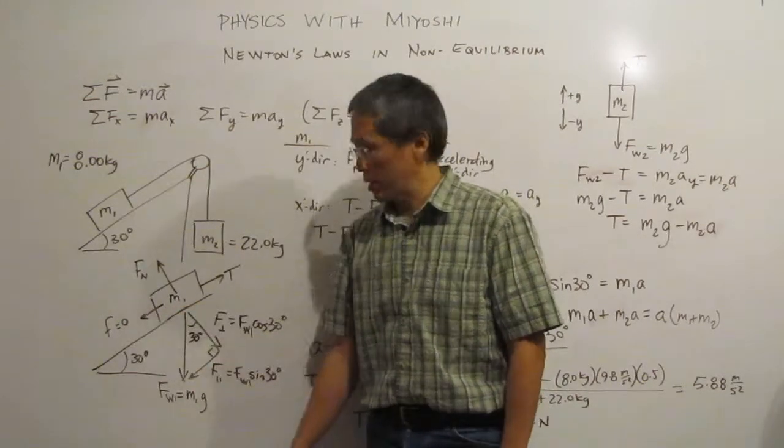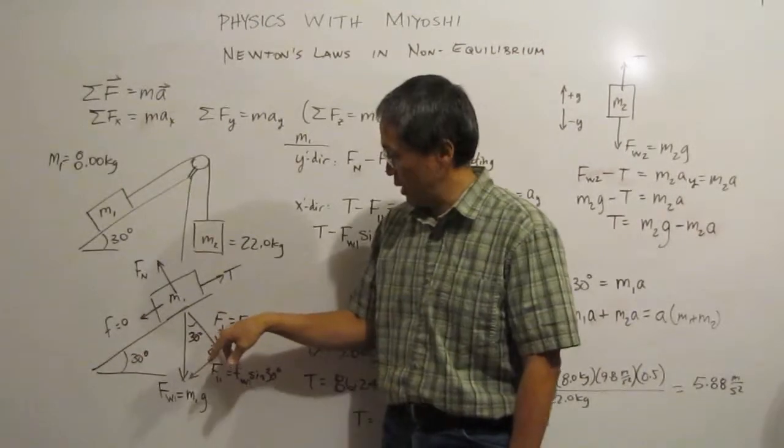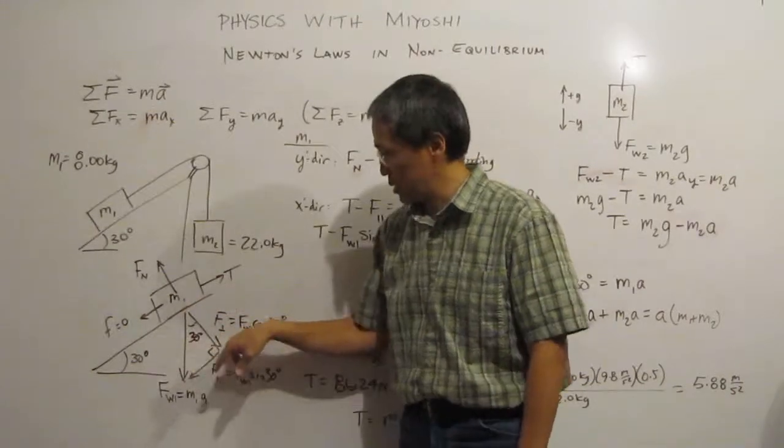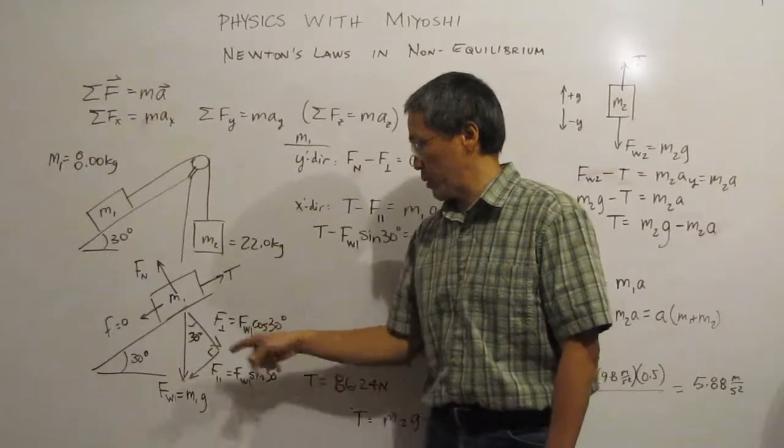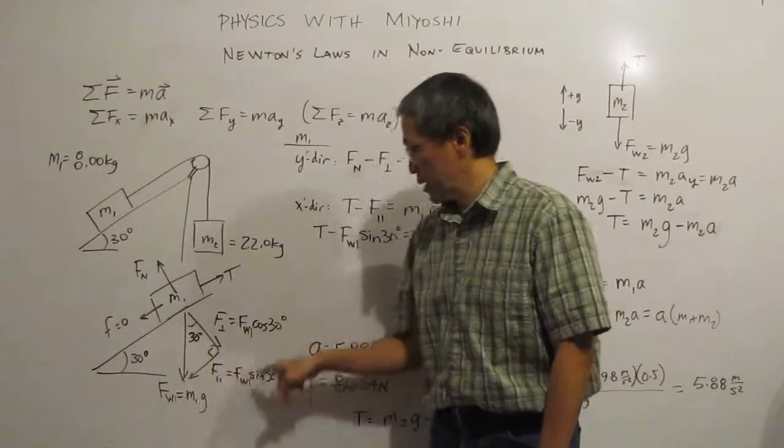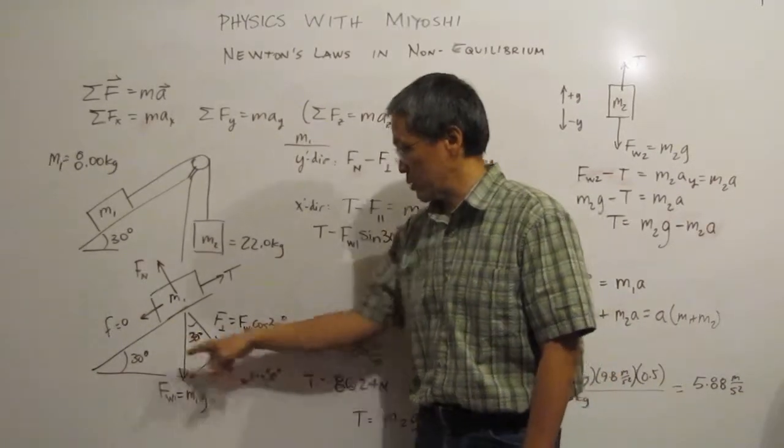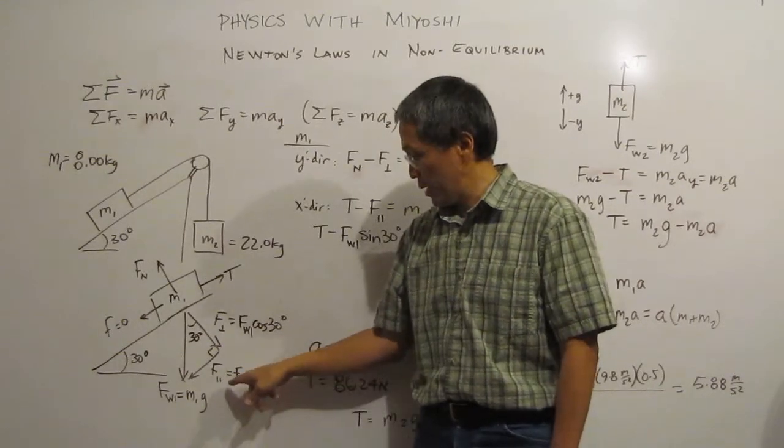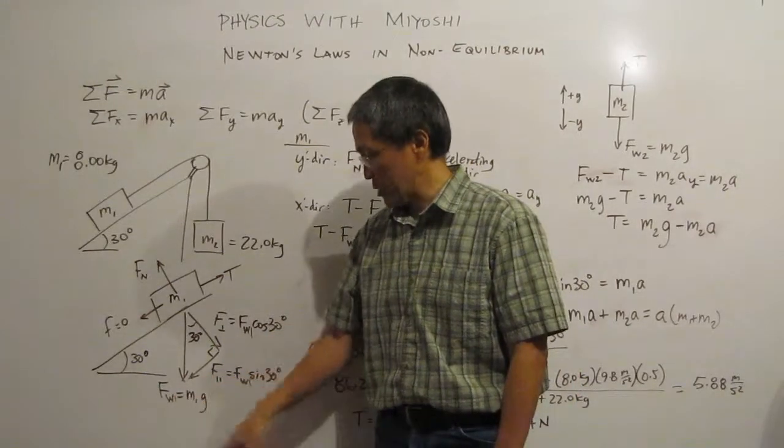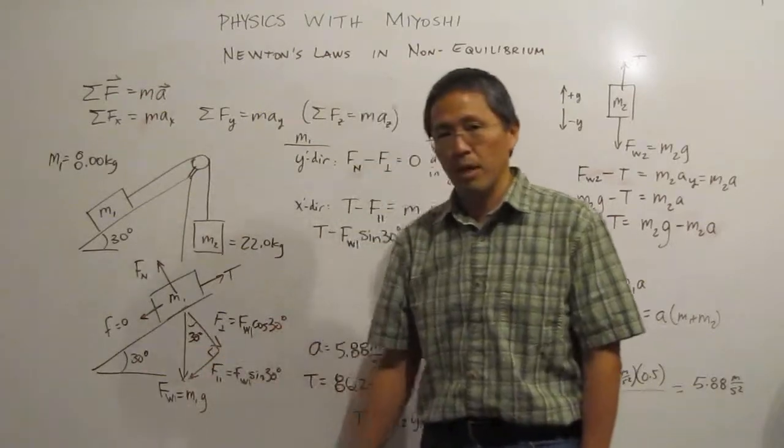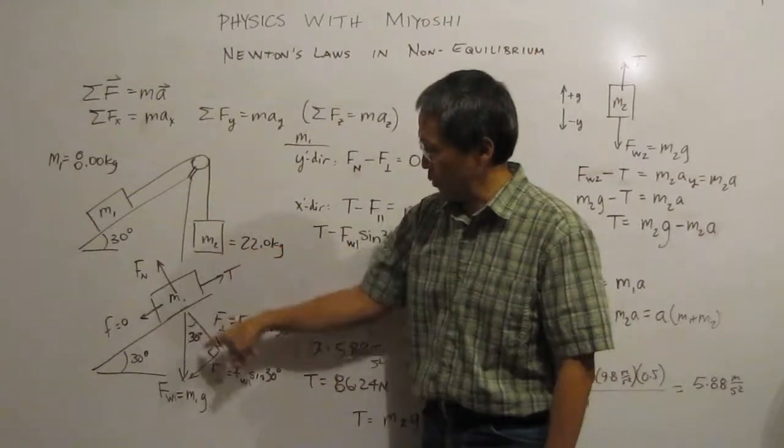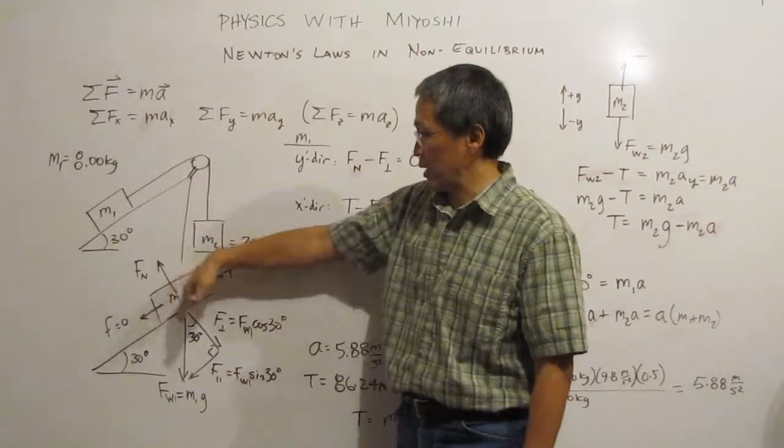But I put that in there because there are times when we're going to do some friction stuff later. As we look here at the free body diagram, we can break up our weight, our force of weight into our perpendicular and parallel components. We can see that the perpendicular component, remembering our definition of cosine, is our force of weight 1 times our cosine of 30 degrees in this case, which is our angle. Our parallel component is force of weight 1 times our sine of 38 degrees, and we can see that our weight itself is mass 1 times g, which we know from all of our previous dealings.